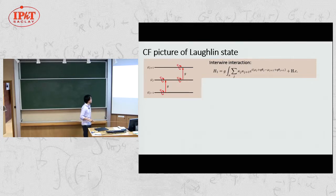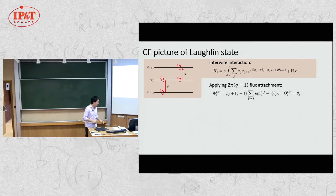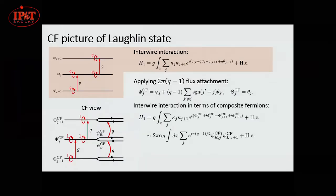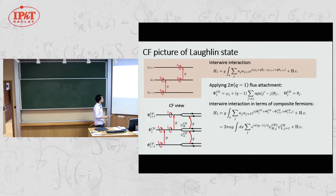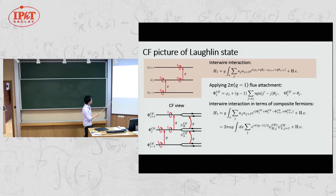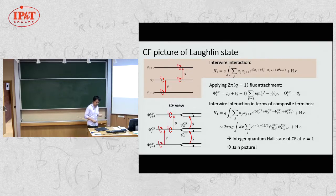Now, let's look at the Laughlin state in terms of composite fermions. For Q=3, we apply a 4π flux attachment. The original interaction now looks like an argument φ+θ or φ−θ in the exponent. We define new electron operators — composite fermions — and the interaction looks just like hopping of composite fermions between neighboring wires, pairing right-going composite fermion from one wire with left-going from another. There is an edge mode corresponding to composite fermions, much like the integer quantum Hall state — this represents the Jain picture of the Laughlin state.